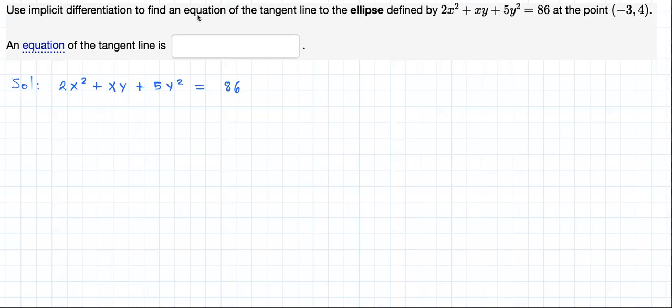Use implicit differentiation to find an equation of a tangent line to the ellipse defined by 2x squared plus xy plus 5y squared equal to 86 at the point (-3, 4). Based on implicit differentiation, we should start by taking derivatives of both sides of this equation with respect to x.